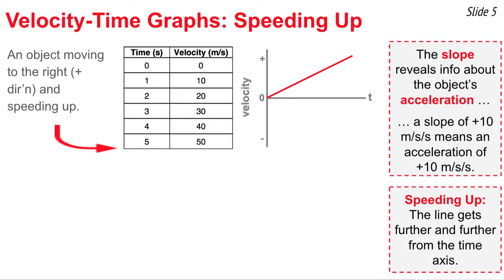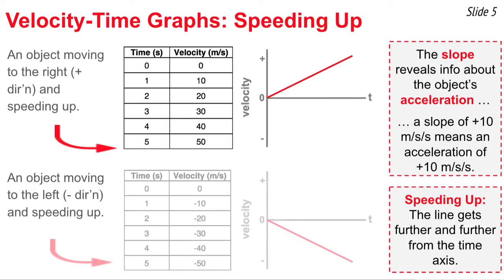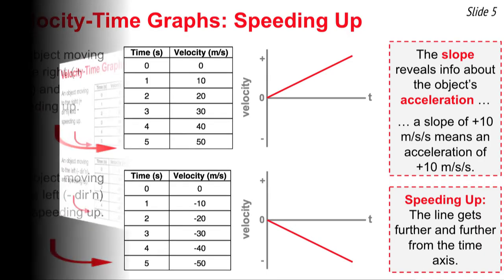For an object moving to the left and speeding up, such an object has a negative acceleration. When we plot the points, we notice the line has a negative slope.